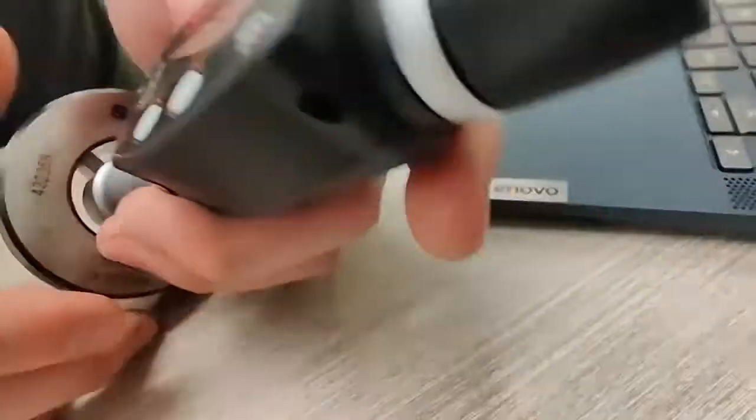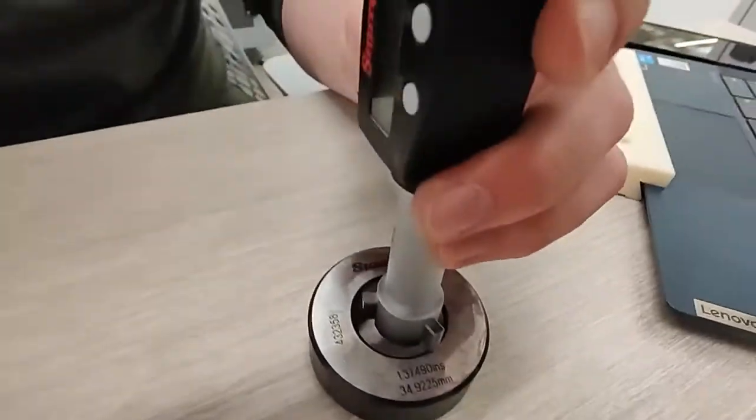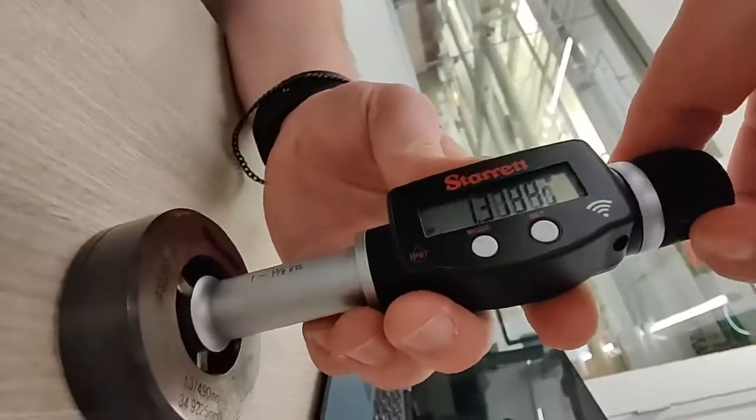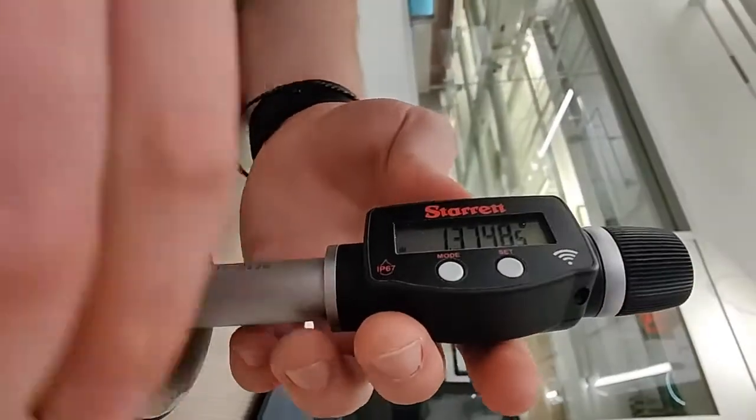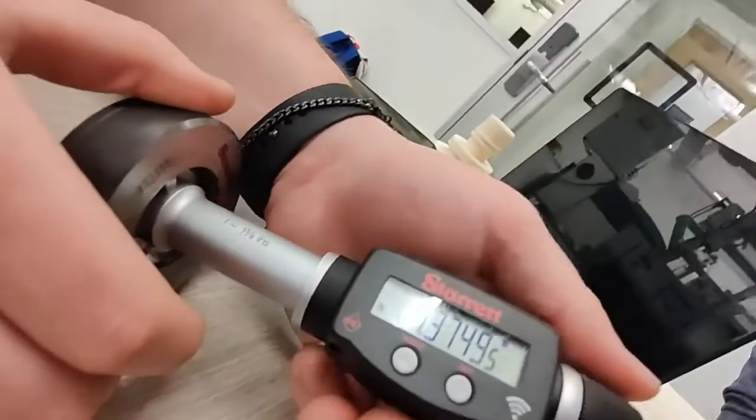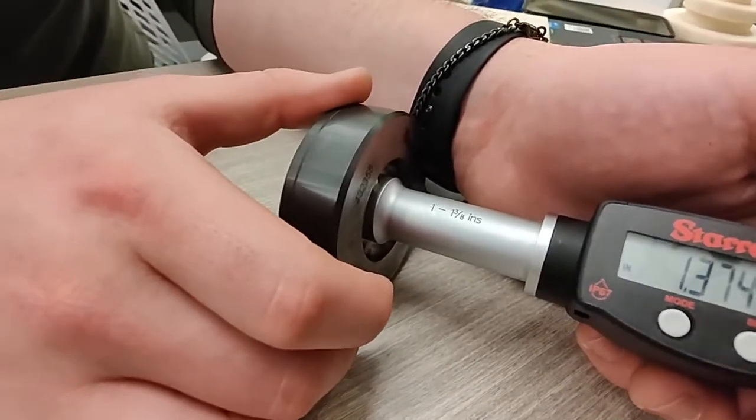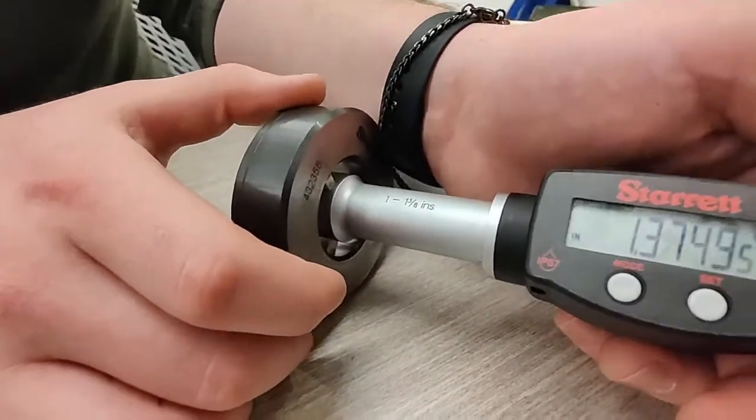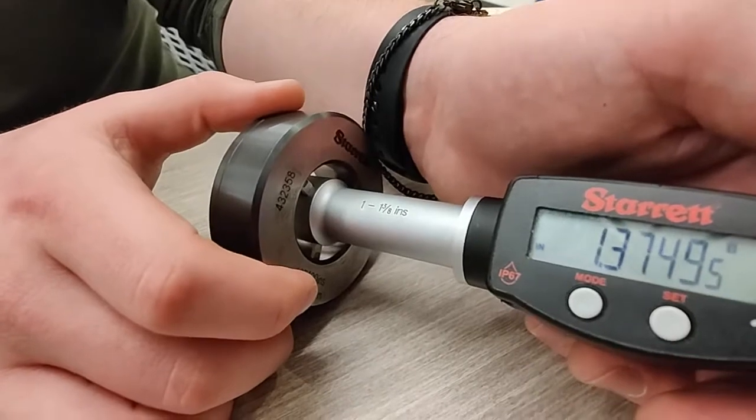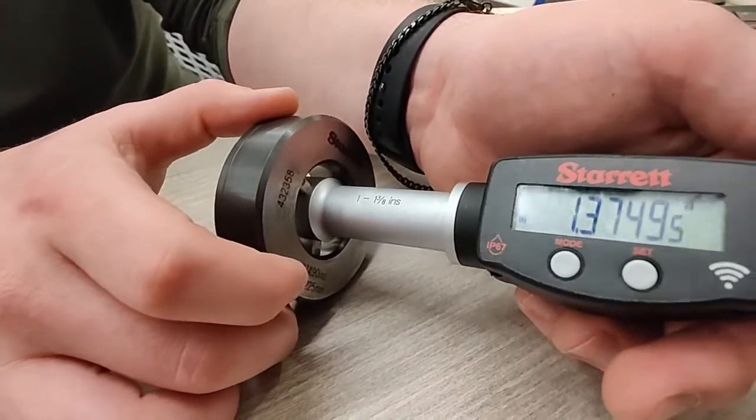So now our micrometer will read correctly on the internal bore of this gauge within five ten-thousandths, no, five one-hundredth thousandths of an inch.